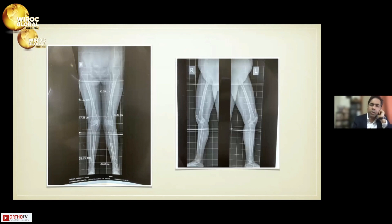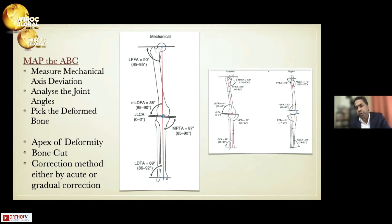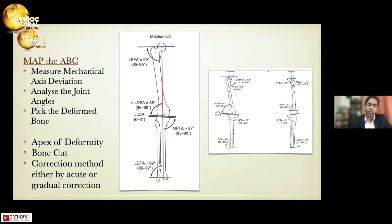We need to position the patient properly for the AP view: patella facing forward, knees in full extension. We then map the ABC as described by Dr. Dror — measure the mechanical axis deviation, analyze the joint line angles, pick the deformed bone (whether femur or tibia), find the apex of deformity, plan the bone cut, and then pick the correction method. We need to memorize the relevant angles: LDFA, MPTA, as well as the sagittal plane parameters.